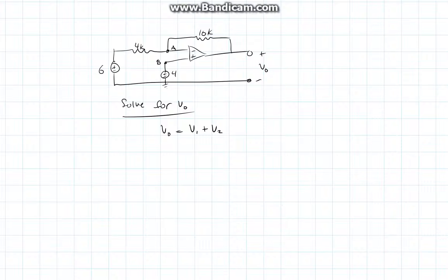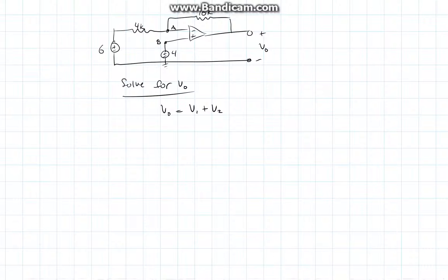So V0 equals V1 plus V2, where V1 is calculated using the 6-volt power source, and V2 is calculated using the 4-volt power source. So let's start off by solving for V1.